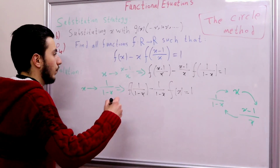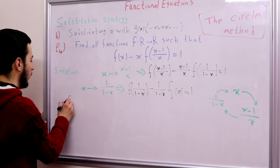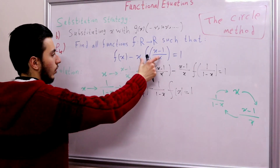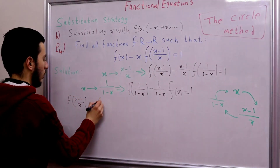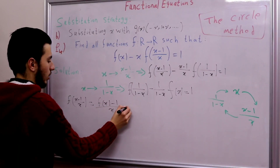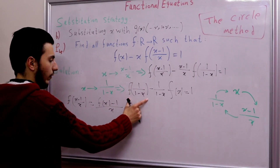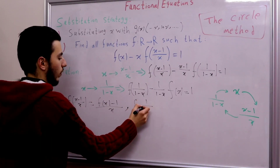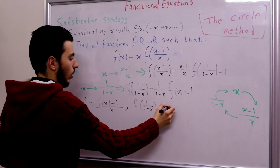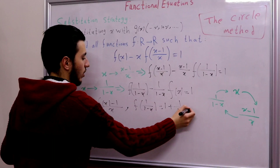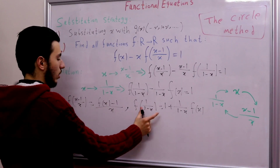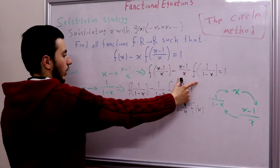From the first equation, f(x minus 1 over x) equals f(x) minus 1 over x. From the third equation, f(1 over 1 minus x) equals 1 plus 1 over (1 minus x) times f(x). All we need to do now is substitute these two expressions into the second equation.